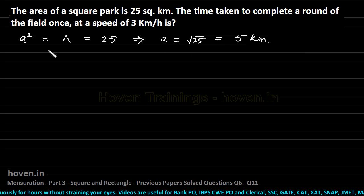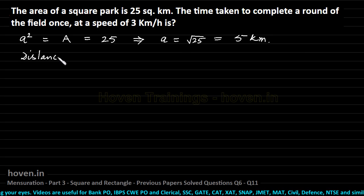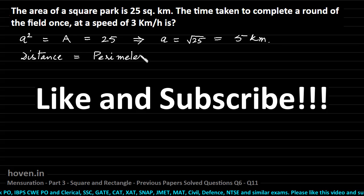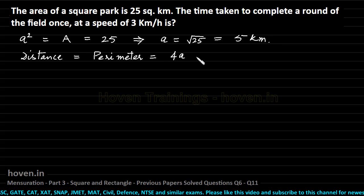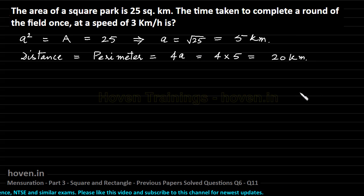Once we have the side, we are now in a position to obtain the distance to be travelled. So we can write distance is equal to perimeter, which is equal to 4 times the side, which is equal to 4 into 5, that is equal to 20 kilometers. So the distance to be travelled is 20 kilometers.